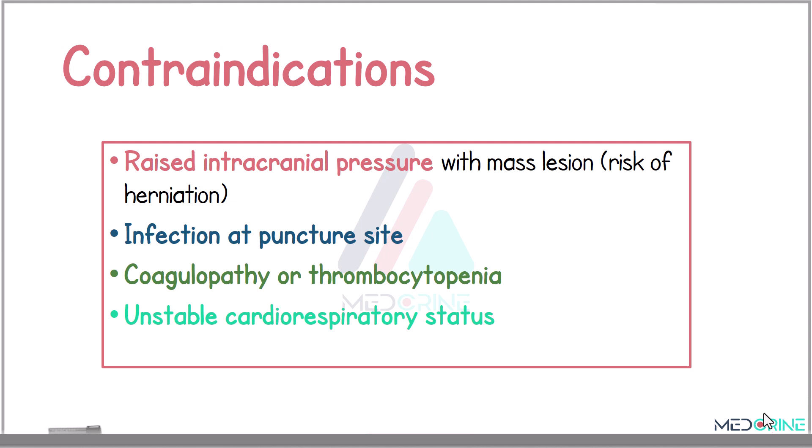Before proceeding, we need to assess for the contraindications of lumbar puncture. These contraindications include an elevated intracranial pressure due to a mass lesion, which increases the risk of brain herniation. Also, lumbar puncture is contraindicated if there is a local infection at the puncture site, if a patient has a coagulopathy or thrombocytopenia, and in unstable patients.